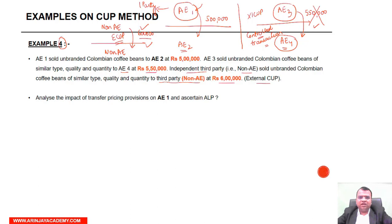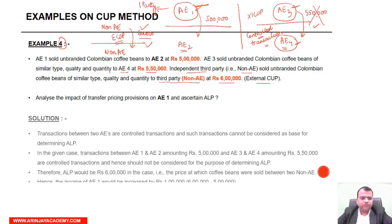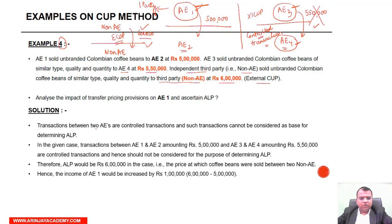In Example 3, the sale was made by AE-1 itself to a third party — that was an internal CUP. Here, the sale is by AE-3 — a different entity — and moreover to another associated enterprise AE-4. Transactions between two AEs are controlled transactions and cannot be considered as a base for determining ALP.